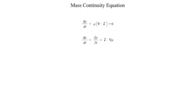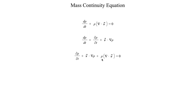But it doesn't stop there. Remember that dρ/dt is a Lagrangian derivative. One of the definitions we work with in meteorology is that the Lagrangian equals the Eulerian plus all external forcings — in this case, just advection. So the total derivative equals the local partial derivative plus the advection of density. Plugging that in, we get: ∂ρ/∂t + V·∇ρ + ρ(∇·V) = 0.